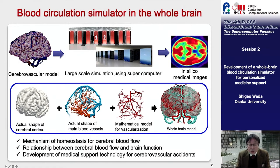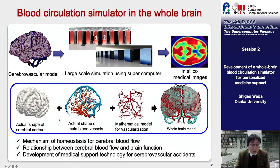To achieve this goal, we first needed a vascular model of the whole brain scale. Therefore, we created a whole brain blood vessel model using the real configuration data of the cerebral cortex, and measured blood vessels obtained by medical images and mathematical algorithms to generate the vasculature tree for small arteries and veins.